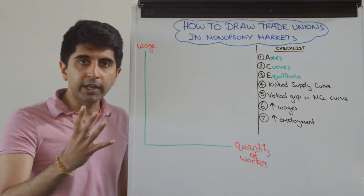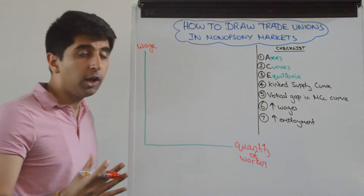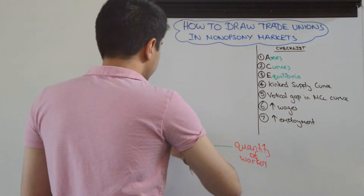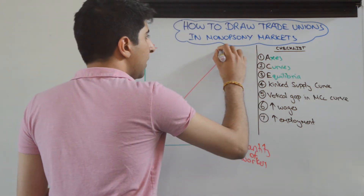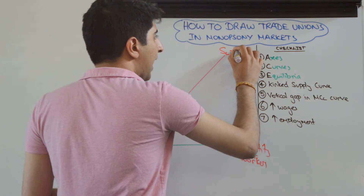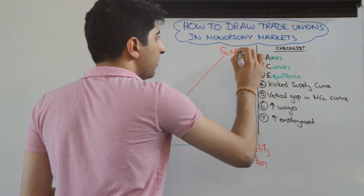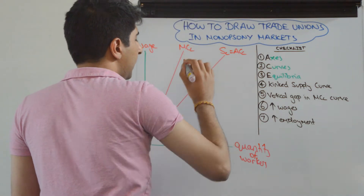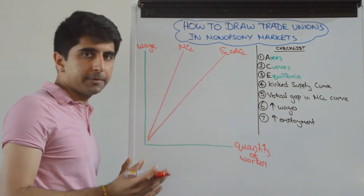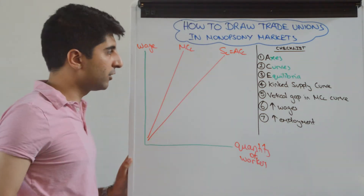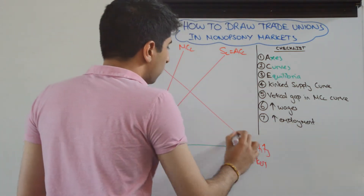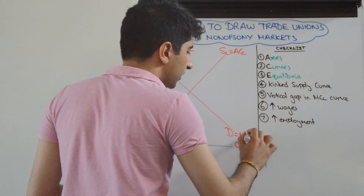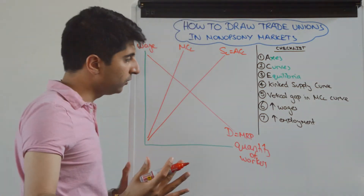We start by drawing a monopsony controlled labour market, which we've done many times. We draw the supply of labour, which is equal to the average cost of labour — label that as such. The marginal cost of labour is upward sloping, twice as steep, greater than the average cost of labour. And we draw a downward sloping demand curve which is equal to the marginal revenue product.